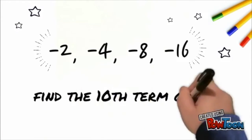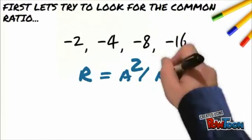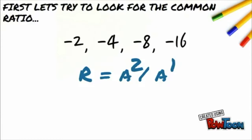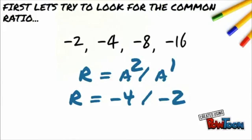For our first example, the given sequence is negative 2, negative 4, negative 8, and negative 16. Find the tenth term of the sequence and its common ratio. First, we have to find the common ratio using the formula r is equal to a sub 2 divided by a sub 1. A sub 2 is negative 4 since it is the second term and a sub 1 is negative 2 since it is the first term. So, a sub 2 or negative 4 divided by a sub 1 or negative 2 is positive 2. The common ratio will be positive 2.